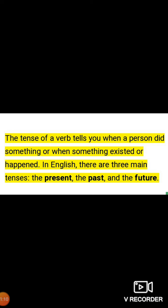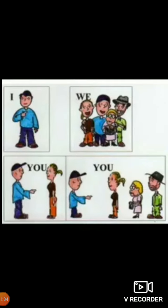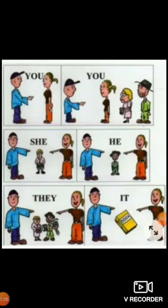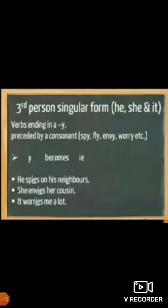The tense of a verb tells you when a person did something or when something existed or happened. In English there are three main tenses: the present, the past, and the future. We should also know the grammatical persons: first person singular, first person plural, second person singular, second person plural, third person singular (he, she, it), and third person plural (they). We should know this before we learn tenses.